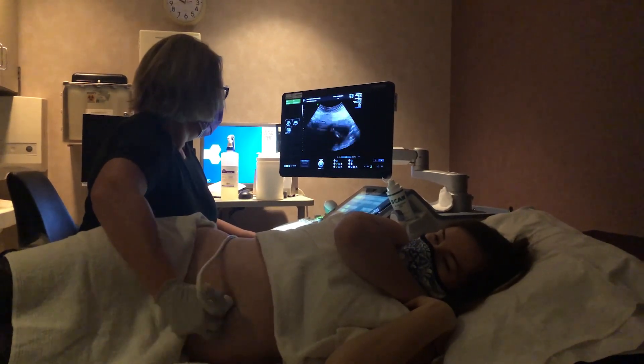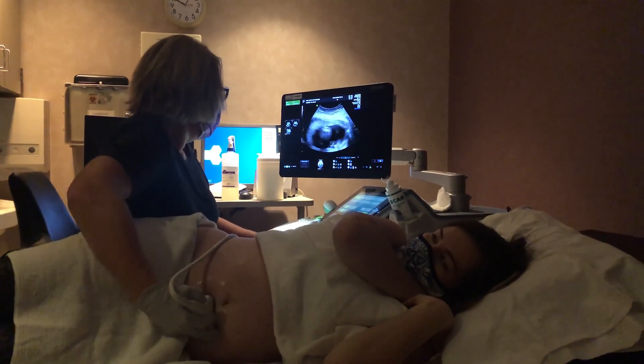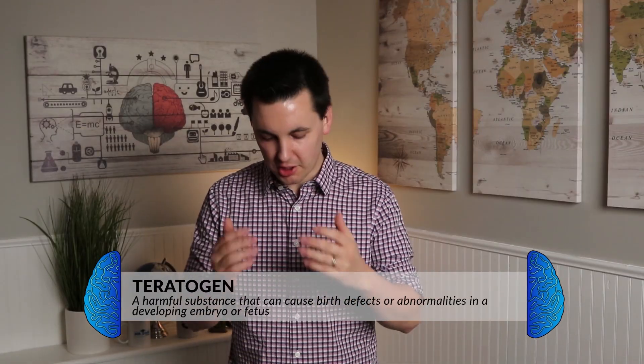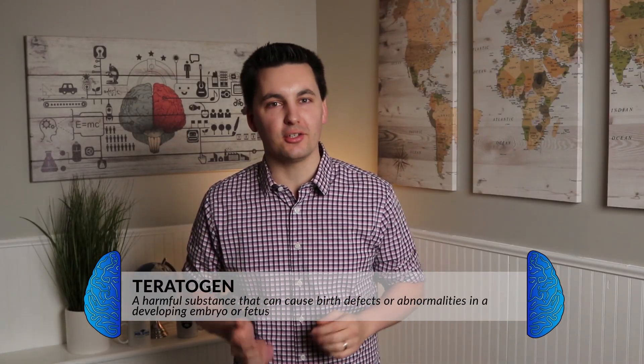Now in the embryonic stage, the mother needs to be careful of what they breathe in, drink, and eat. It is important that the mother does not ingest any teratogens during her pregnancy. A teratogen is a harmful substance that can cause birth defects or abnormalities in the developing embryo or fetus. Alcohol would be an example of a teratogen, which if ingested during pregnancy could lead to neurological and physical impairments. Drinking alcohol while pregnant can also lead to fetal alcohol syndrome, which can cause physical and cognitive abnormalities in a child.